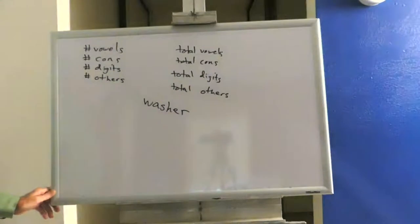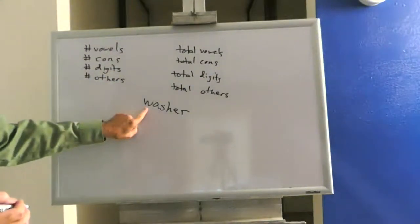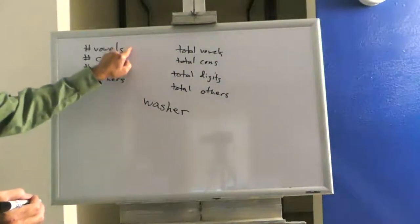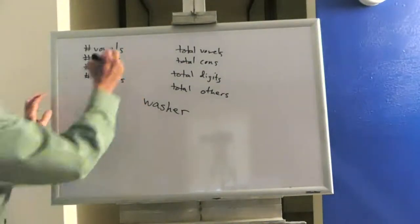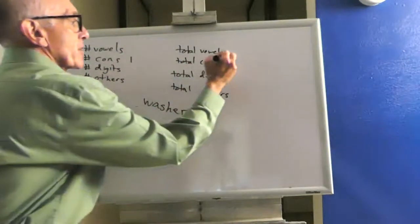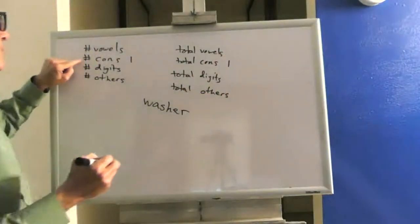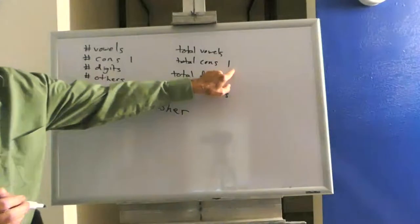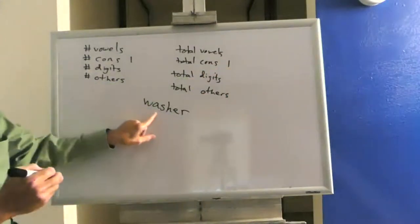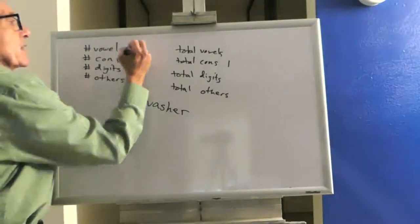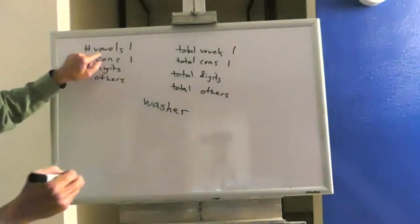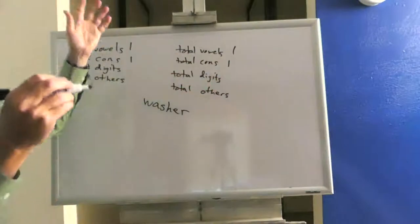We're going to go through that sentence one character at a time. We start with W. Is W a vowel? No. Is W a consonant? Yes, it is. So I'm going to put a hash mark there. I now have one consonant for this sentence and one altogether. Move on to the next letter. Is A a vowel? Yes, it is. That means I have one vowel and one vowel for everything.